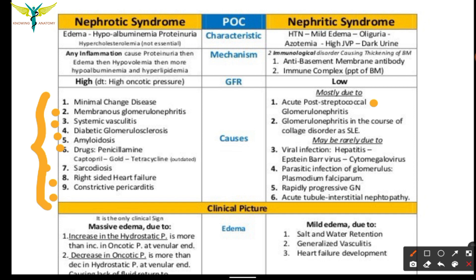Nephritic syndrome is mostly caused by acute post-streptococcal glomerulonephritis and glomerulonephritis in disorders such as systemic lupus erythematosus. It may also be caused by viral infections like hepatitis, Epstein-Barr virus, and cytomegalovirus. Parasitic infections — specifically Plasmodium falciparum — rapidly progressive glomerulonephritis, and acute tubulo-interstitial nephropathy can also be causes.